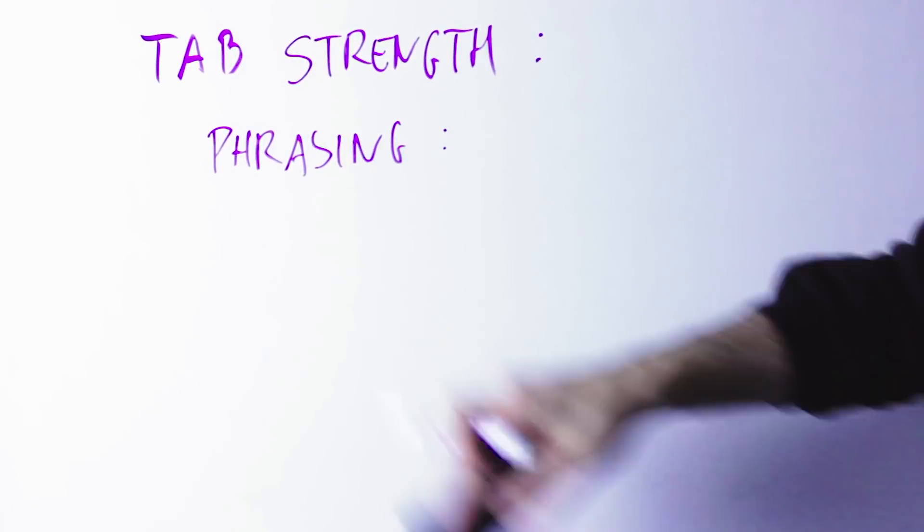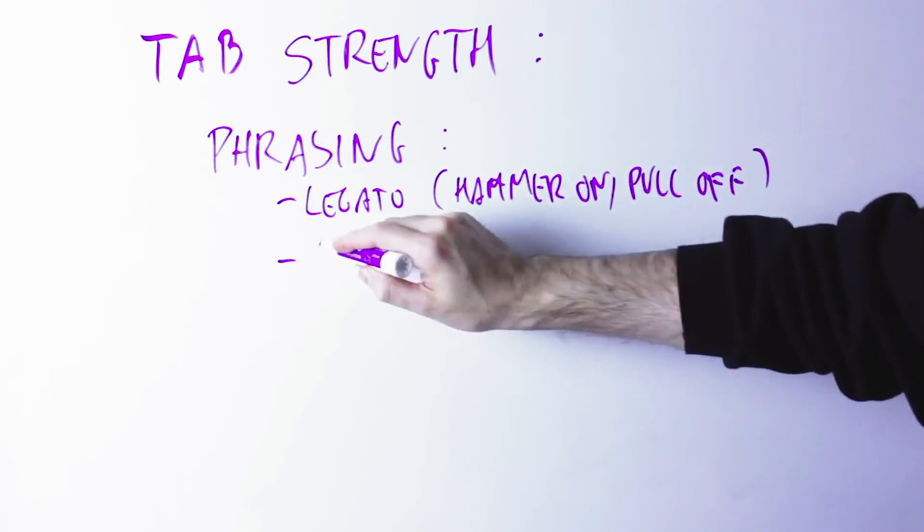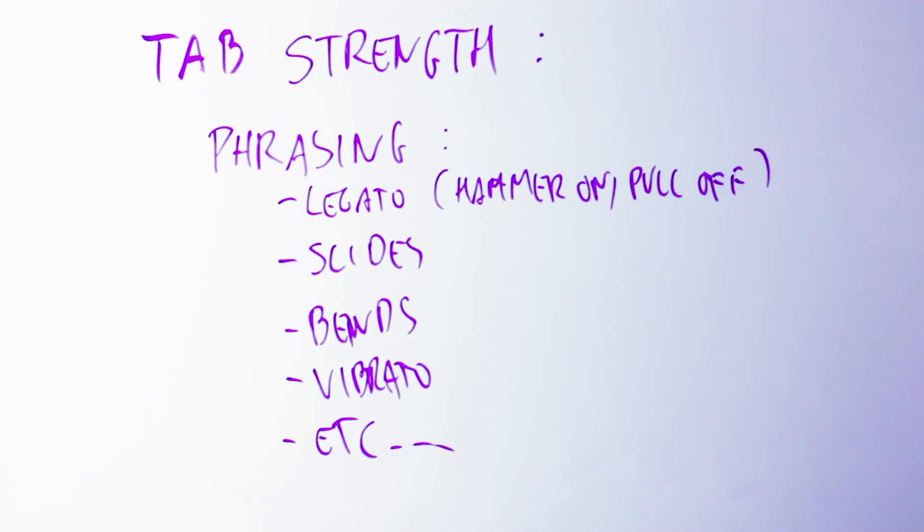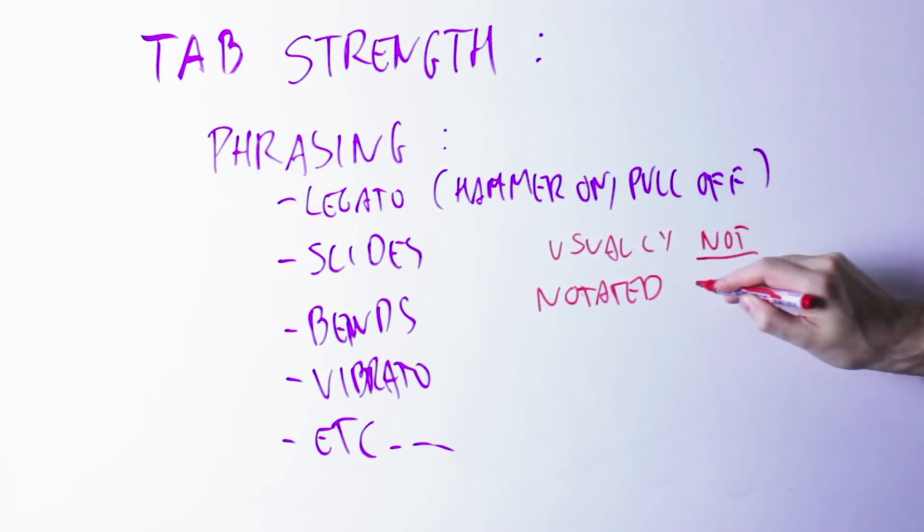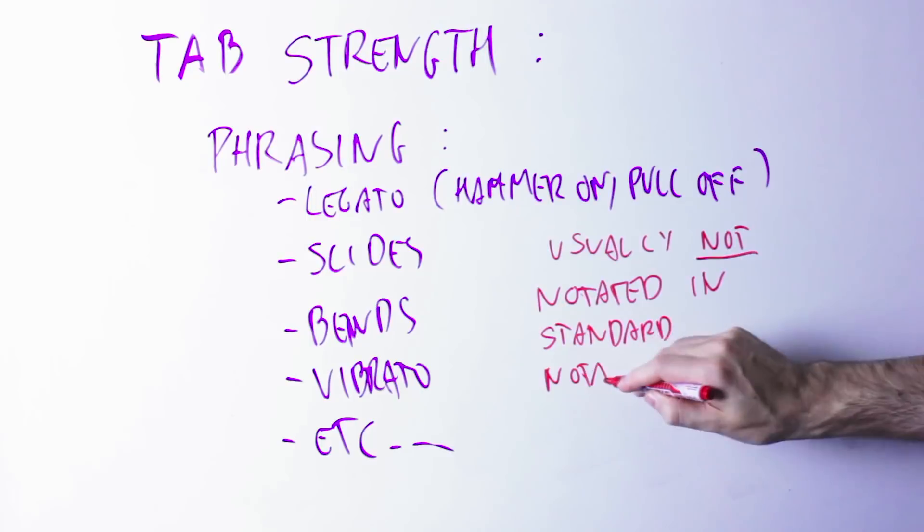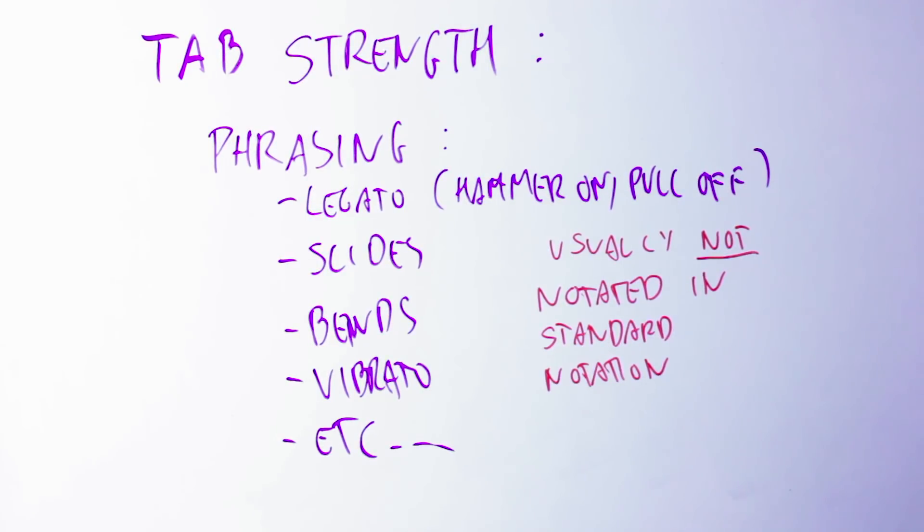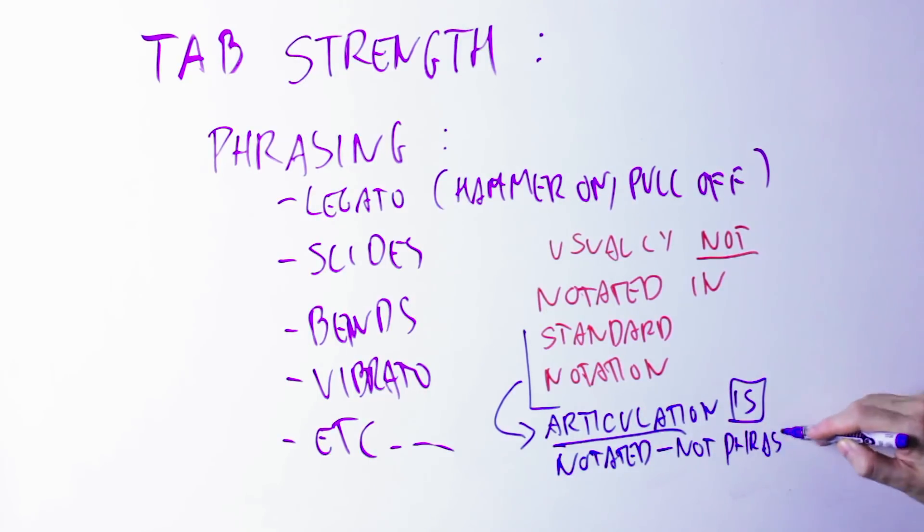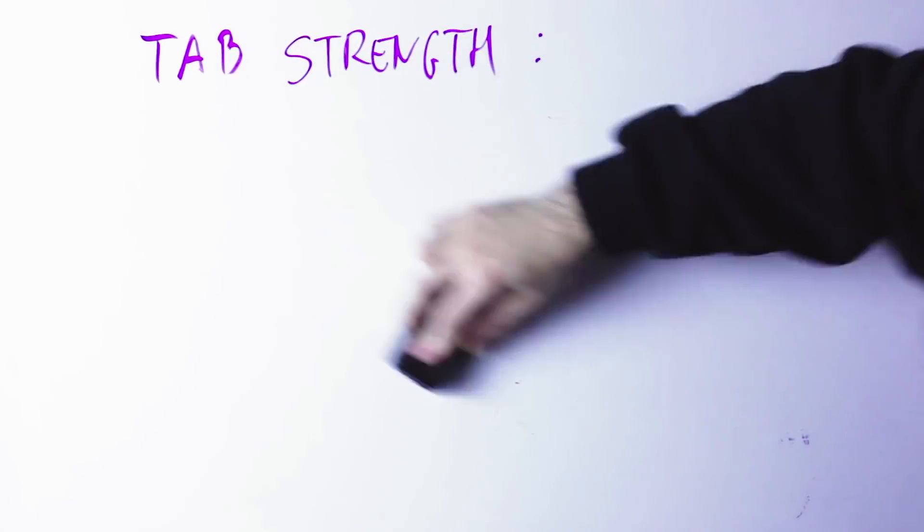Another thing, tablature seems to be better to indicate phrasing elements such as slides, vibrato, hammer-ons, pull-offs. I'm not saying those things cannot be notated in standard notation, they can, it's just that usually they are not notated and so those elements are left to the taste of the person reading. While, again, if we are trying to communicate with a guitar player, tablature excels in making clear exactly how we are playing a specific piece as opposed to just what notes we are playing.